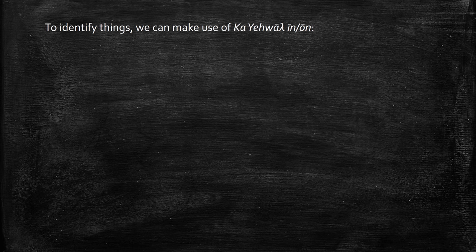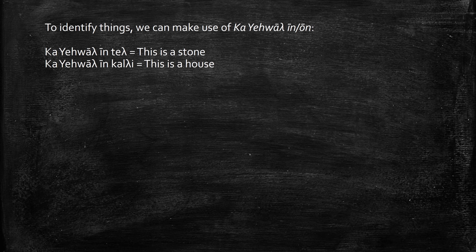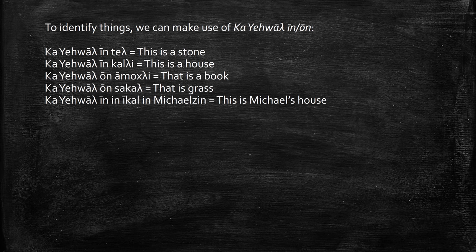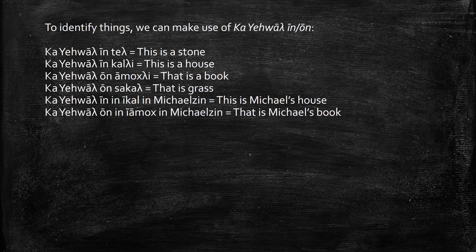To identify things we can make use of Calle Huatlin or Calle Huatun. Calle Huatlin tetl — this is a stone. Calle Huatlin kalli — this is a house. Calle Huatlin omumoshli — that is a book. Calle Huatlin losakkat — that is a cross. Calle Huatlin iqal in Michael — this is Michael's house. Calle Huatlin omu in iamoshikatl — that is Michael's book.